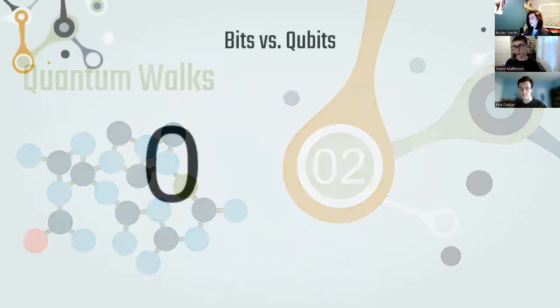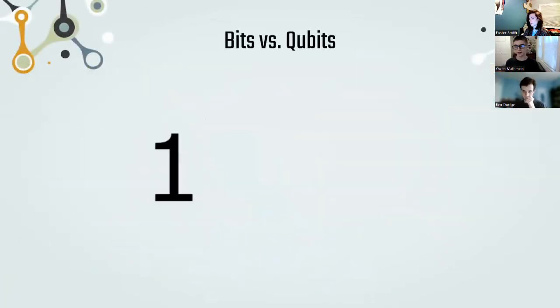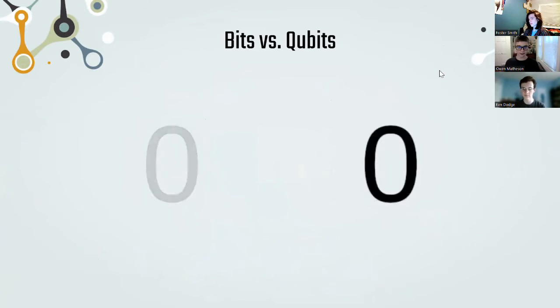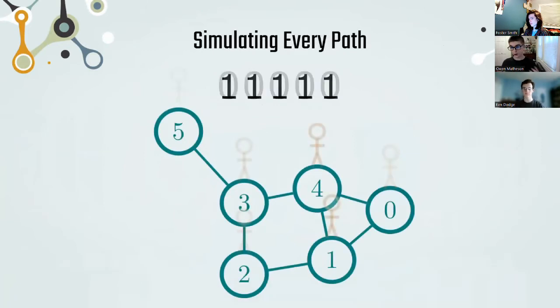On a random walk you're using normal bits. Those are a zero or a one. In quantum those bits are going to be zero and one and everything in between. So in a quantum walk instead of just walking in a random direction we're walking in every direction. We're taking every path possible at once.